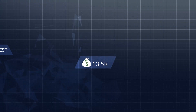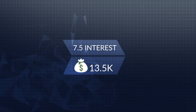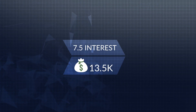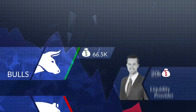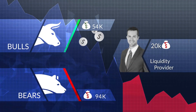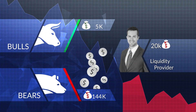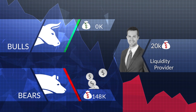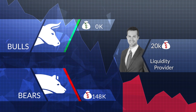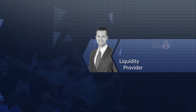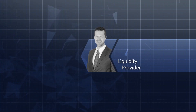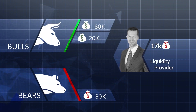FM Trader will get a commission of 7.5% out of the entire turnover, which amounts to $13,500. The bears will generate an 85% profit, or $148,000, covered by the bulls' investments. Risks for the liquidity providers emerge when market conditions reverse.